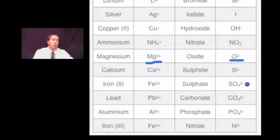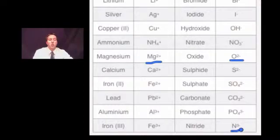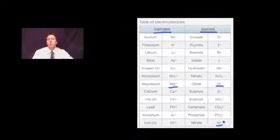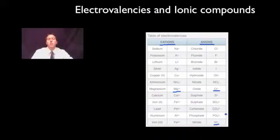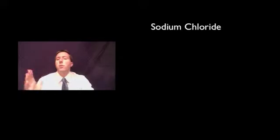Among the negatively charged ions: sulfate is SO₄ with a charge of 2-, carbonate is CO₃ with a charge of 2-, phosphate is PO₄ with a charge of 3-, and nitride has a charge of 3-. We can use all of this information in a table of electrovalencies to figure out the formula of ionic compounds.